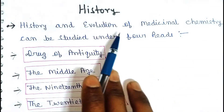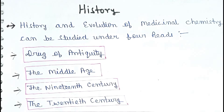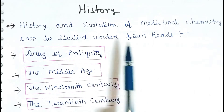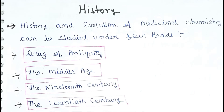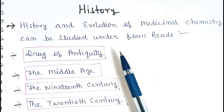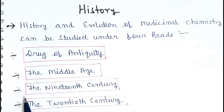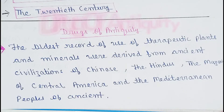The history and evolution of medicinal chemistry can be studied under four heads. These four heads are: first, the drug of antiquity; second, the middle age; third, the 19th century; and fourth, the 20th century. So we have four heads which we will study one by one.